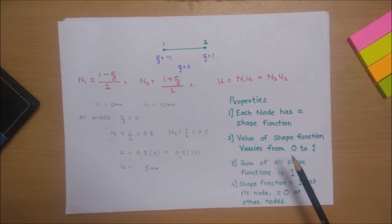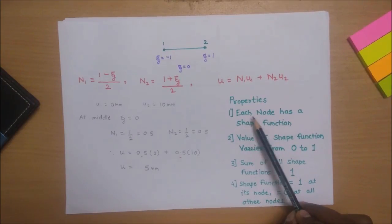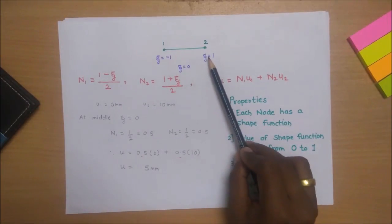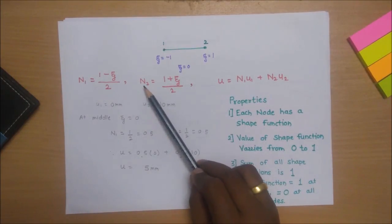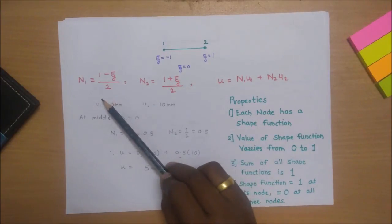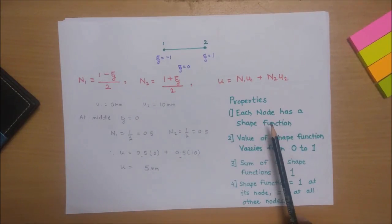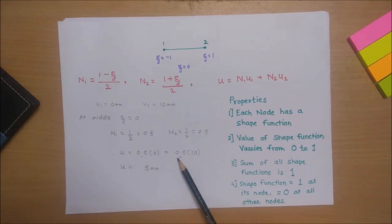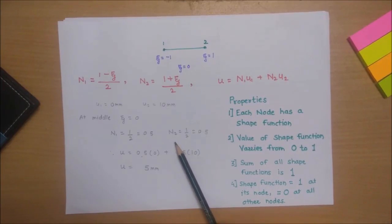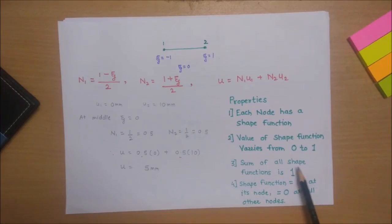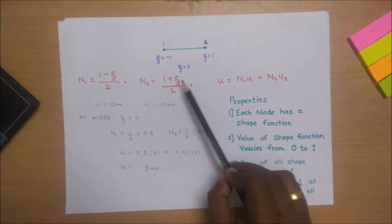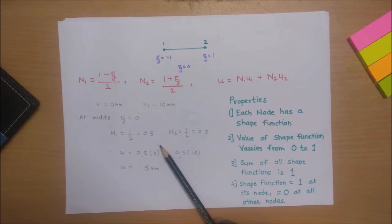This is the use of shape functions. Now let's see their properties. First, each node has a shape function — with two nodes we get N1 and N2; with four nodes we get N1, N2, N3, and N4. Second, the value of each shape function varies between 0 and 1 — the maximum value is 1 and the minimum is 0. Third, the sum of all shape functions equals 1, so N1 + N2 = 1 for two nodes, and this holds for any number of nodes.